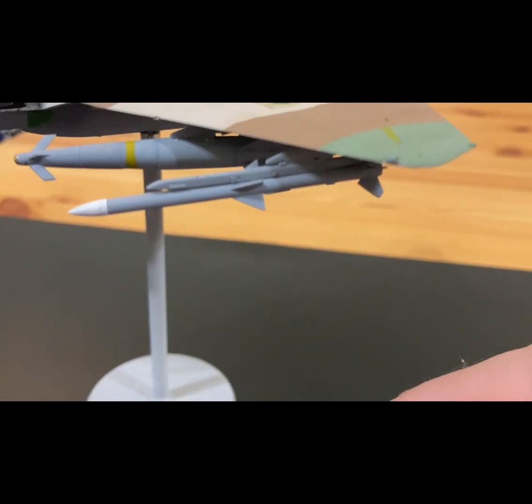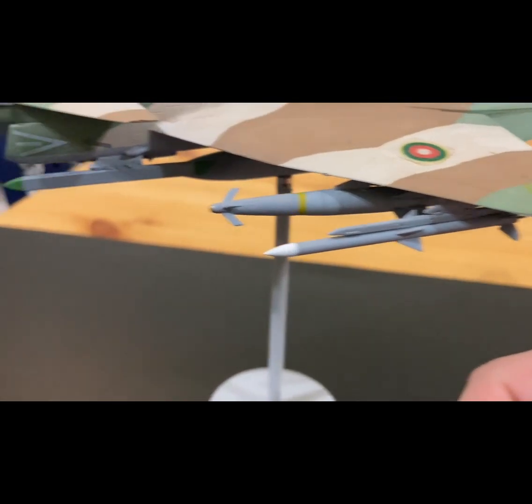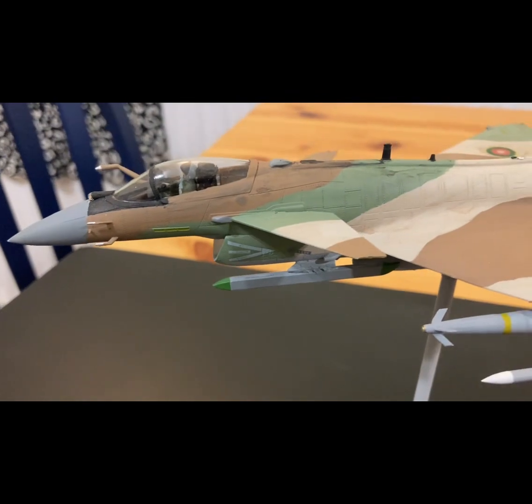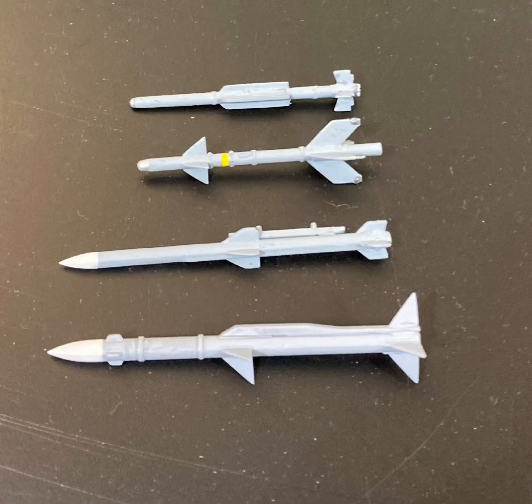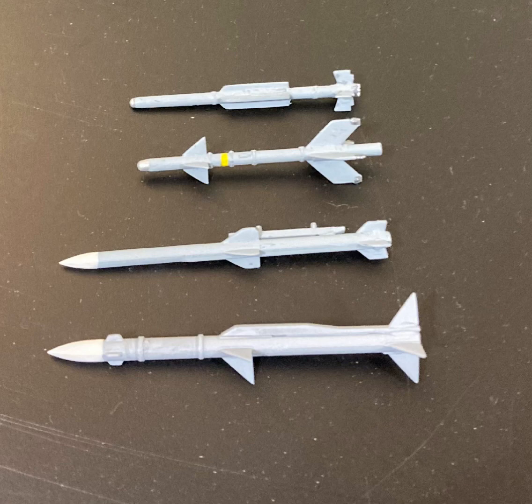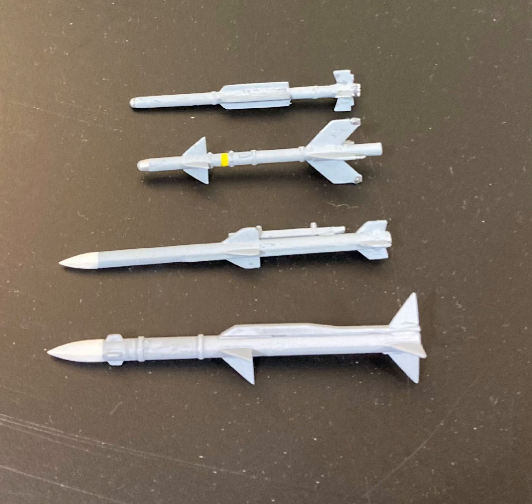And there you go. I hope you found that interesting. I hope it helps with your modeling, and if I've got it wrong, let me know please. I haven't covered the PL-7, which is a copy of the Matra Magic French missile, or the PL-11, which is a copy of the Spanish Aspide, which is itself an improved version of the Sparrow missile, and because I don't use them.